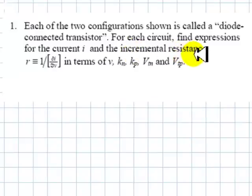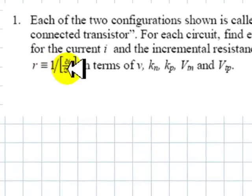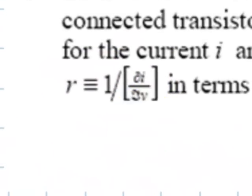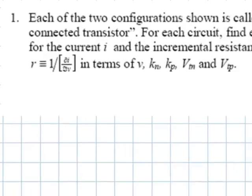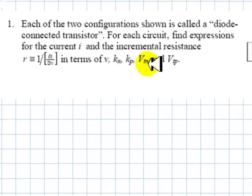Find also the incremental resistance of that device, R, defined as the inverse of dI/dV for the transistor, also in terms of V, KN and VTN.